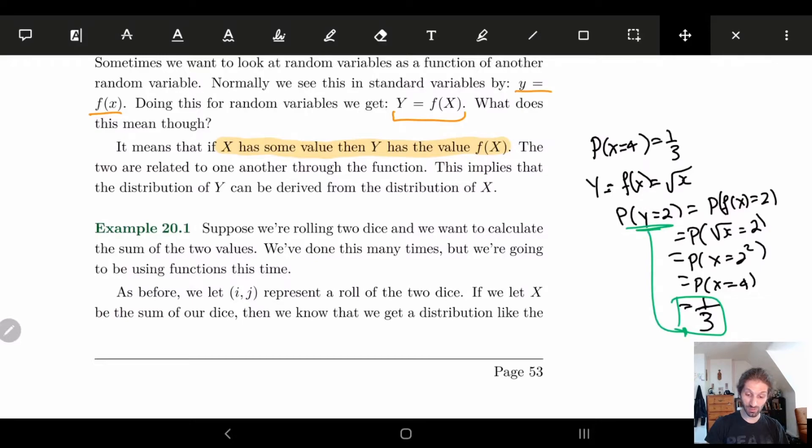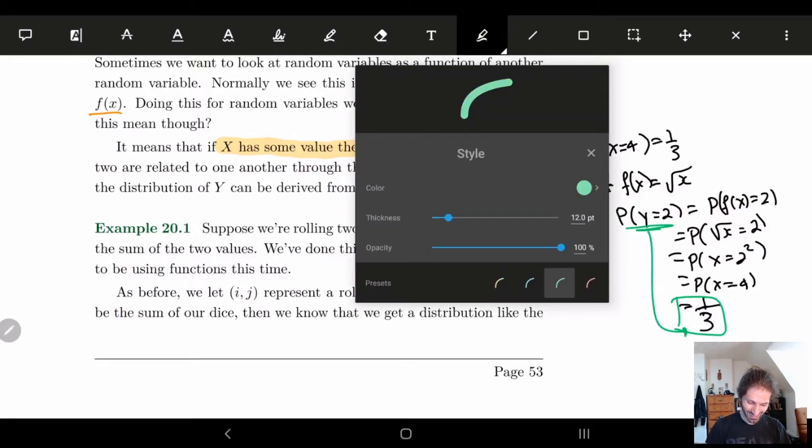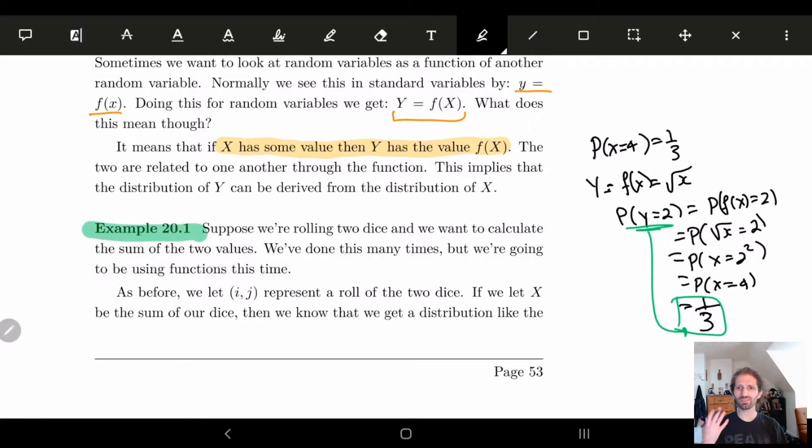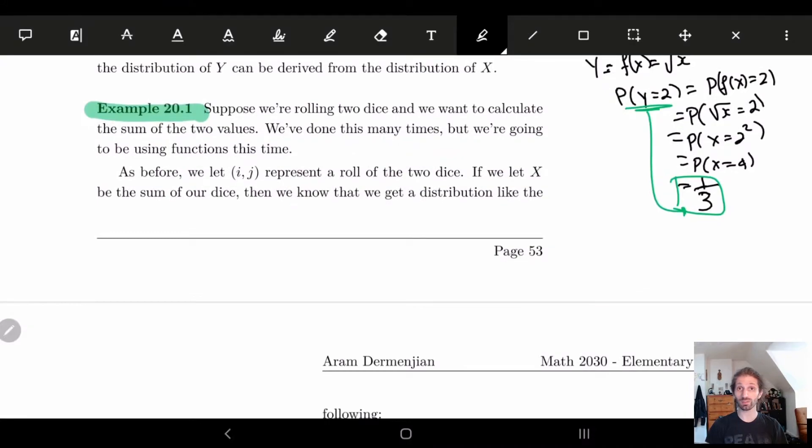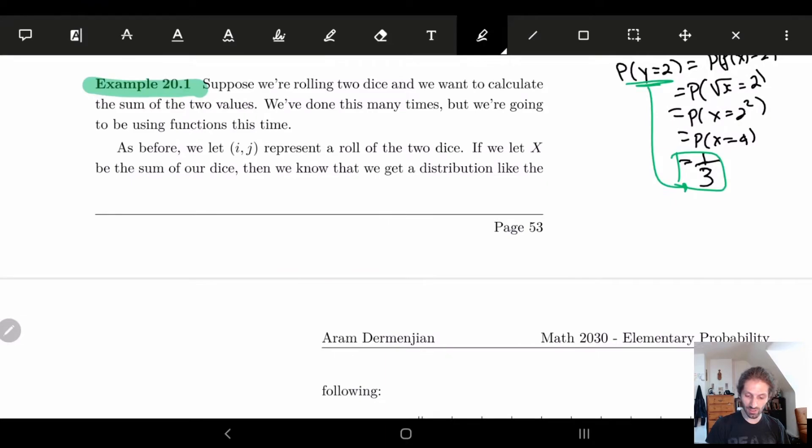Let's look at an example that I've actually prepared beforehand. So it'll be a little easier, and you can kind of see where this actually plays somewhere in real life. So suppose we're rolling two dice. We take two dice and we roll them, and we want to calculate the sum of the two values. That means we got a function, ladies and gentlemen, and humans of all genders. So we've done this a few times, but we're going to do this in a slightly different way using functions, using random variables. So as before, ij is always going to represent our two dice.